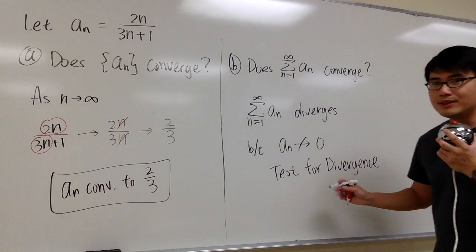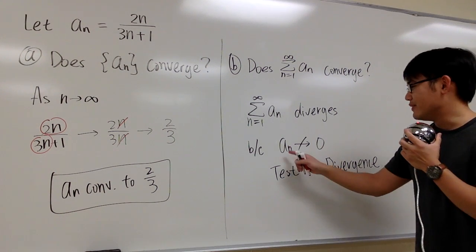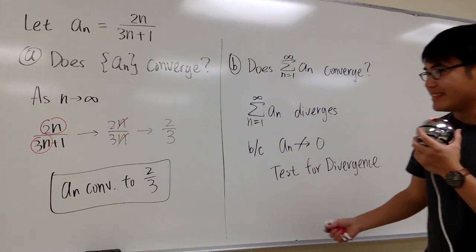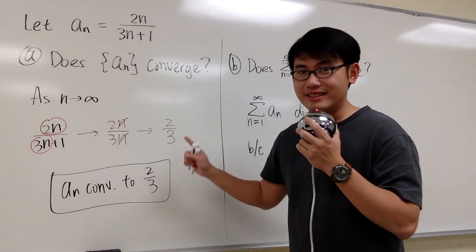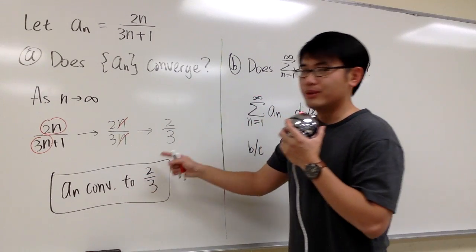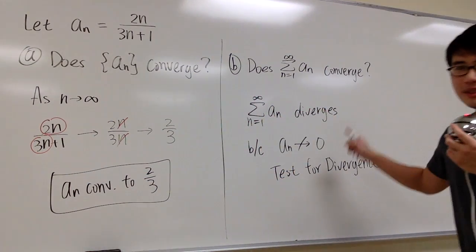And whenever this happens, we can draw the conclusion right away. If a_n does not approach 0, we know the series diverges. So that's good. But the response for the sequence is that the sequence does converge. It converges to 2 thirds, but the series diverges. So that's it.